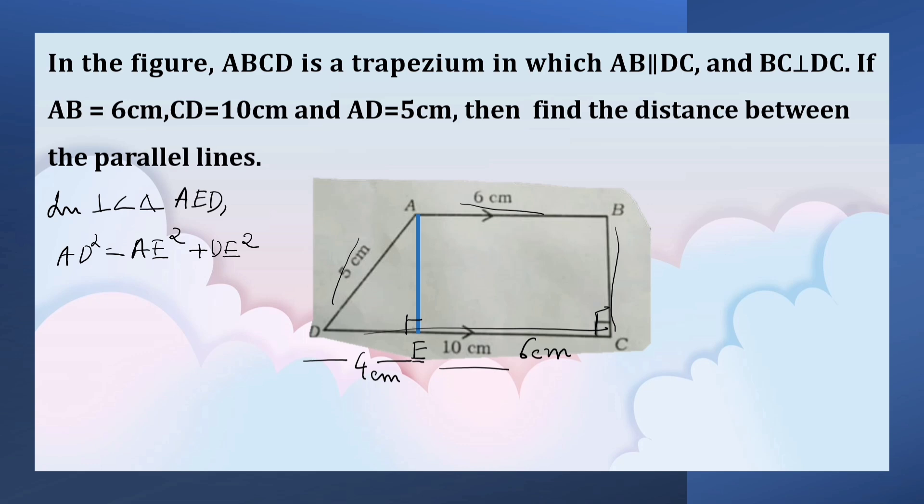So, AD is 5 centimeters. 5 squared is equal to AE squared plus... We have to calculate, DE is equal to 4 centimeters, so 4 squared. AE squared is equal to 5 squared minus 4 squared.